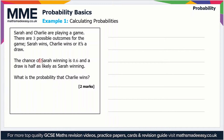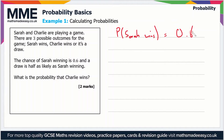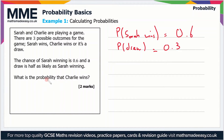The question says the chance of Sarah winning is 0.6, so let's write that in probability notation: P(Sarah wins) = 0.6. Now a draw is half as likely as Sarah winning, so the probability of a draw is half of 0.6, which is 0.3.